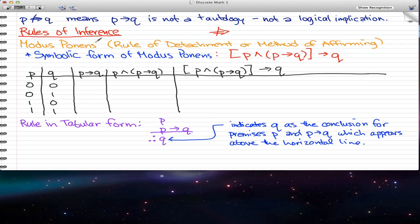The first rule of inference I want to go through is modus ponens, also known as the rule of detachment or method of affirming. The symbolic form of modus ponens is P and P implies Q, and that statement implies Q.